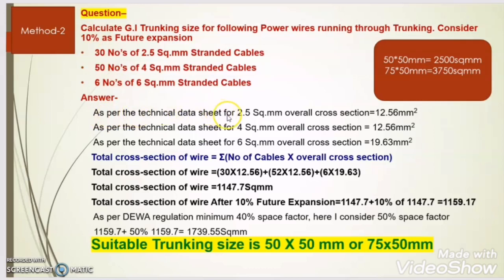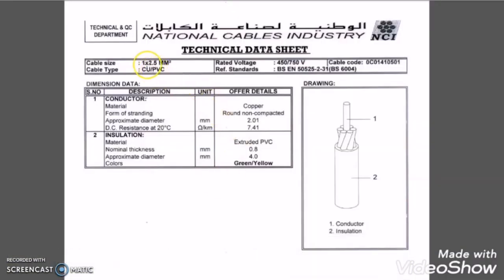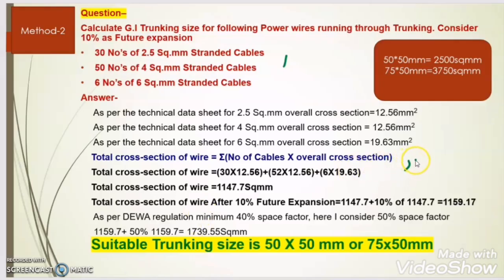As per the technical data sheet, for 2.5 sq mm the overall cross section area is 12.56 sq mm. This I took from the technical data sheet of the wire. For a 1-core 2.5 sq mm wire, the approximate overall diameter is 4mm. If we know the approximate overall diameter of the cable, we can get the cross section area using the formula π(d/2)². Applying this formula, the cross section area of the 2.5 sq mm wire is 12.56 sq mm.